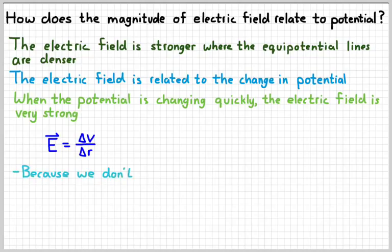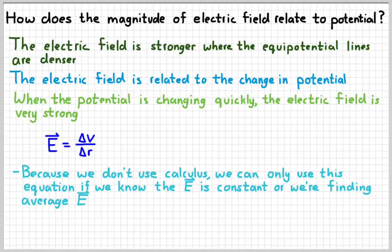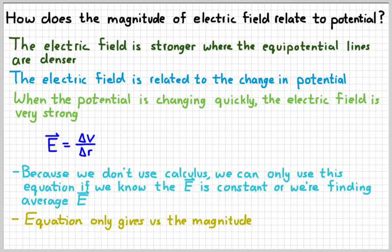Now a couple things to note. We don't use calculus in this class, so we're only going to use this equation if we know that the electric field is constant, or uniform, or if we're just interested in the average electric field in a region. The other thing to remember with these vector equations is that they only give us the magnitude of whatever it is we're looking for. So I'm going to put absolute value bars around that, and remember that in order to figure out the direction of the electric field, or the sign of the electric potential change, I have to understand the situation. I have to analyze what's going on.